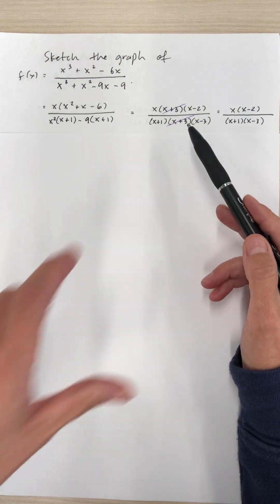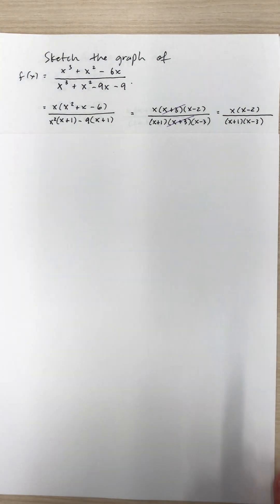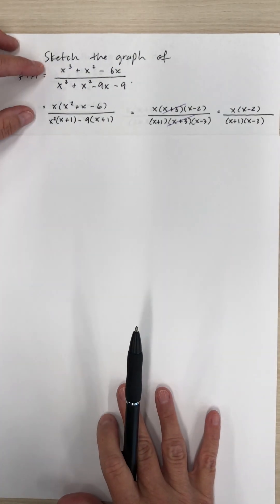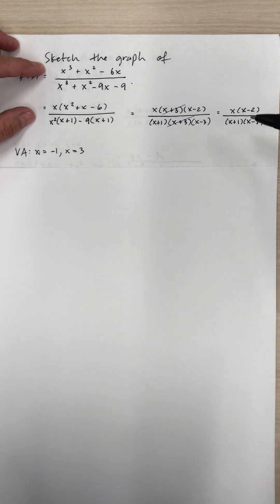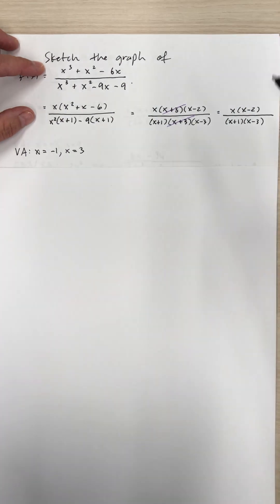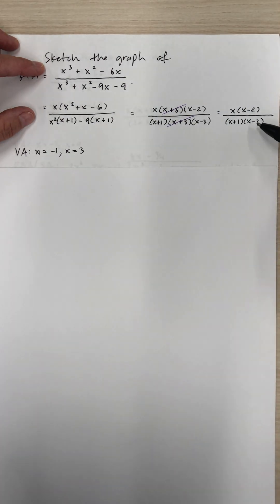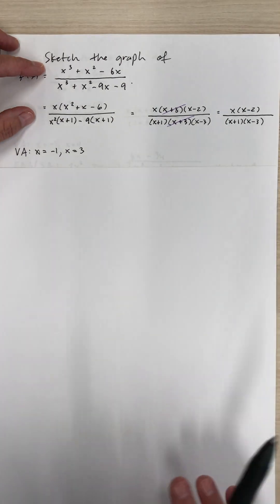We end up having a hole at x equals negative 3 since (x plus 3) cancels out. Since (x plus 1) is still in the denominator, x equals negative 1 is a vertical asymptote. And since (x minus 3) is in the denominator, x equals 3 is also a vertical asymptote.